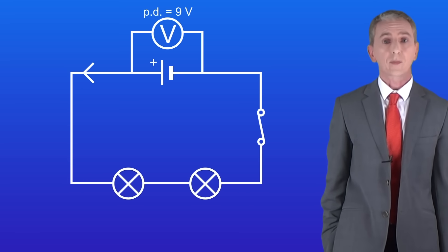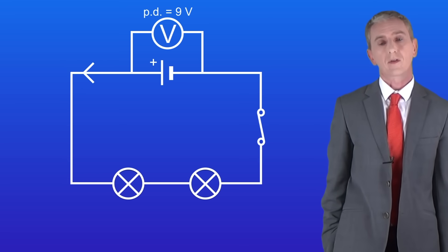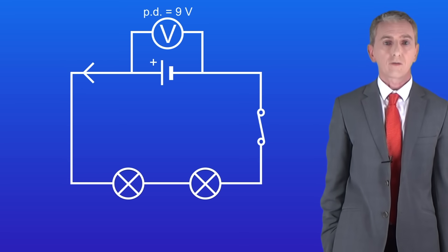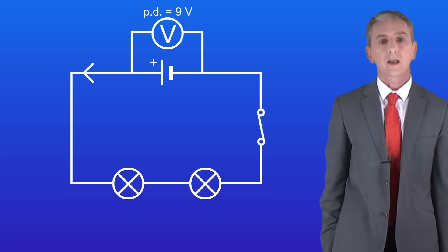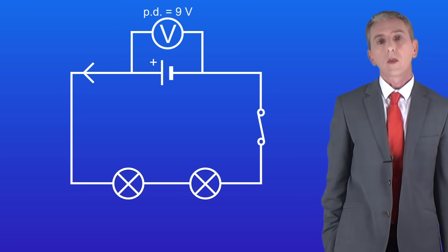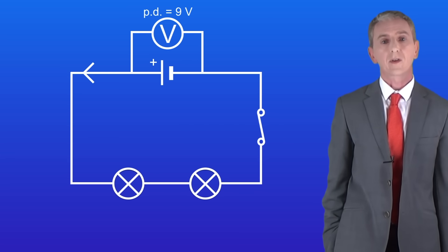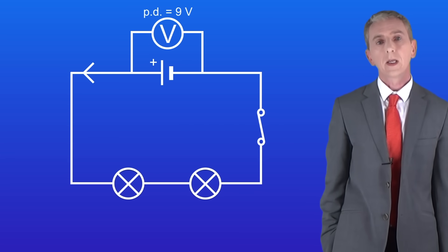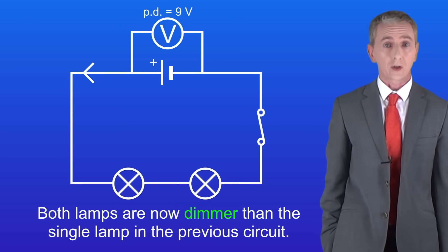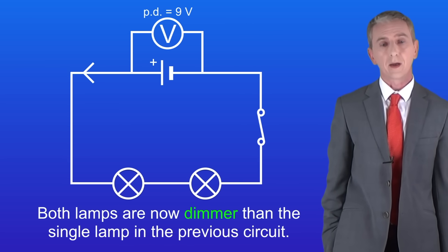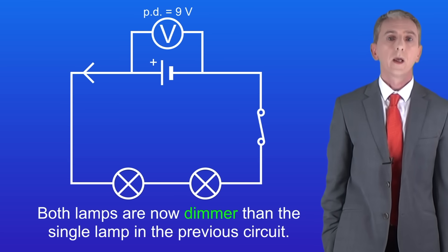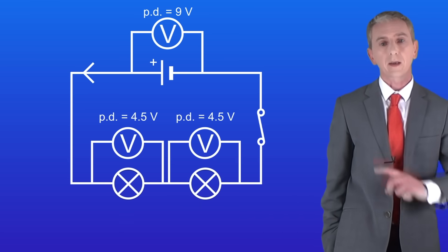This shows a circuit with two lamps in series, and we're going to explore the potential difference in circuits like this. The potential difference across the cell is still 9 volts, which tells us the total energy transfer is the same as the last circuit. One key feature is that both lamps are now dimmer than the single lamp in the previous circuit, and we can explain this by measuring the potential difference across the lamps.